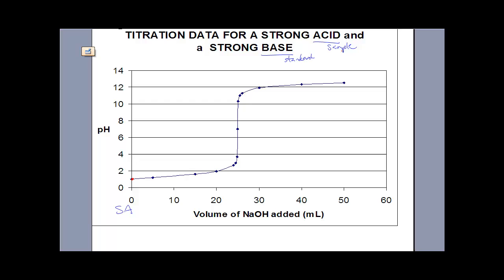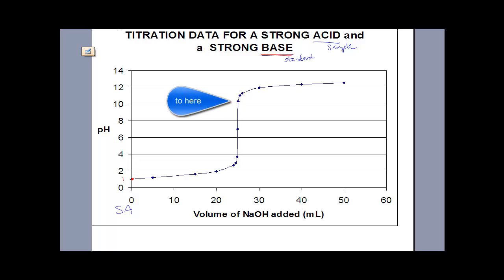Before we even add any standard, we have a pH of about one. One is a strong acid. For every drop that we add, that pH is going to go up a little bit — it goes up because we're adding a strong base. A drop, it increases; a drop, it increases; a drop, it increases. Eventually it skyrockets. One little drop of strong base shoots the pH from 2, 3, 3.8 maybe, right up to like 10.5. Then another little drop, another little drop — the pH starts to curve and eventually mellows out somewhere around 13.